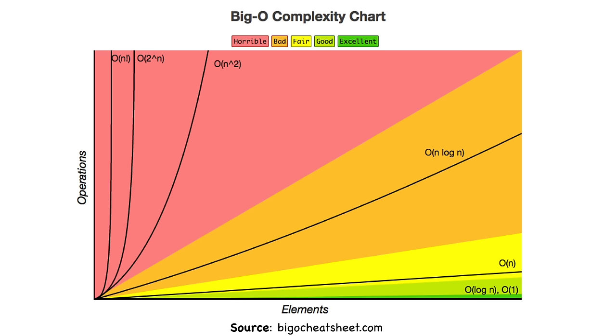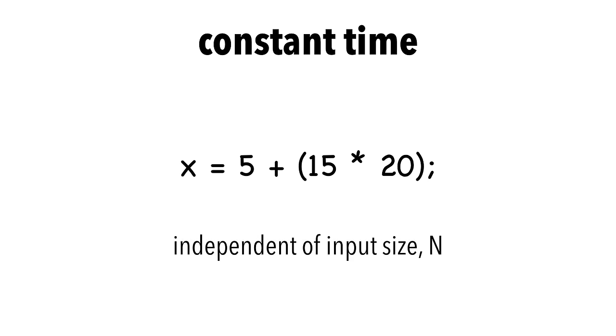Let's run a few examples so you can see what I mean by basic computer steps. We'll start with constant time. Imagine we have the following line of code. This basic computer statement computes x and notice it does not depend on the input size in any way. We say this is Big O(1).